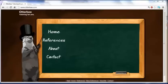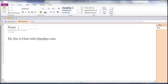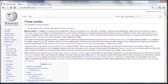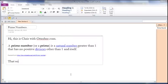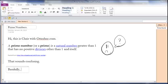Hi, this is Chris with otterd.com. Prime Numbers. A prime number, or a prime, is a natural number greater than 1 that has no positive divisors other than 1 and itself. That sounds confusing. Basically, a prime number can only be divided by 1 and itself.